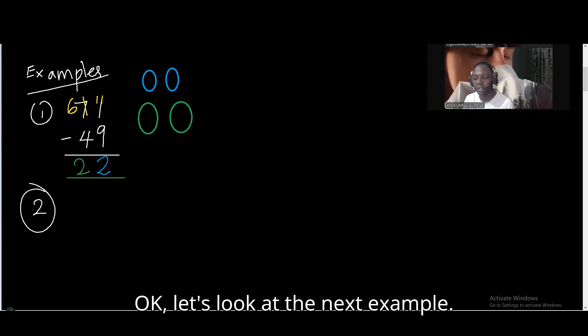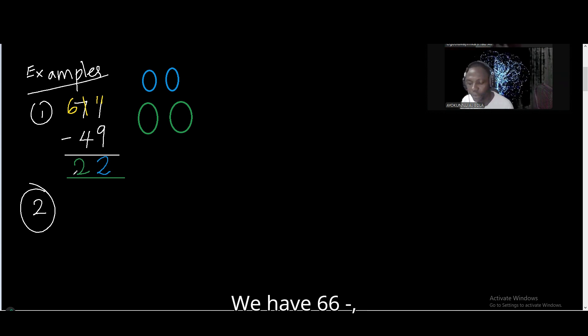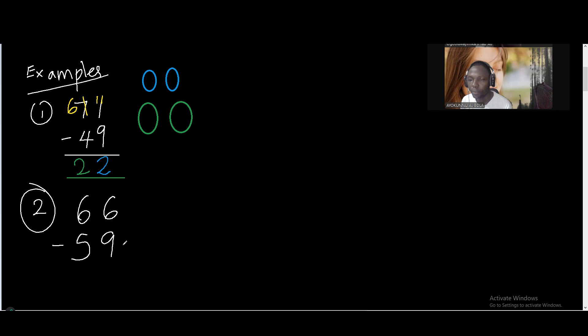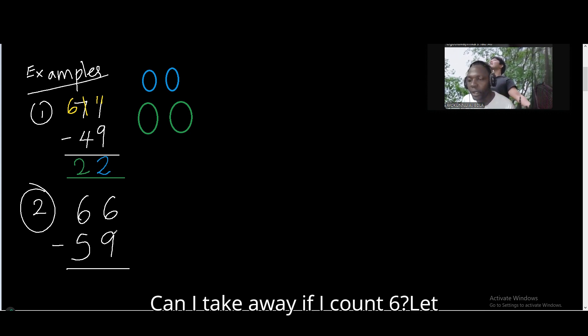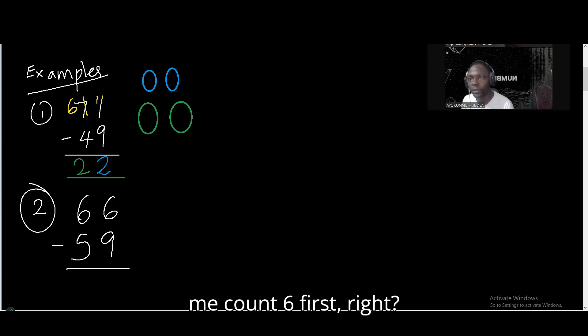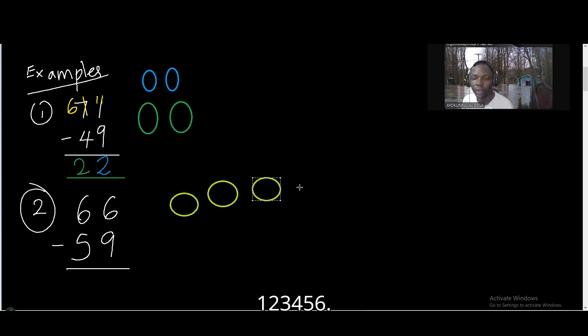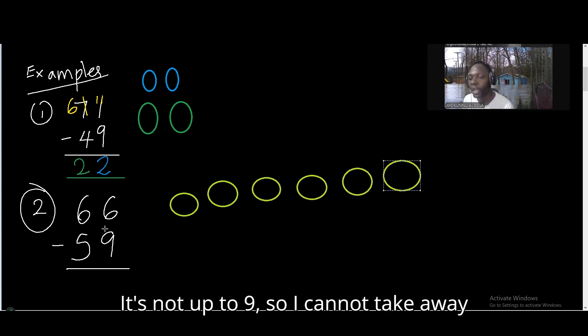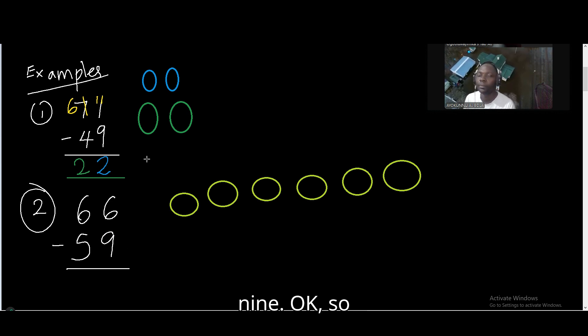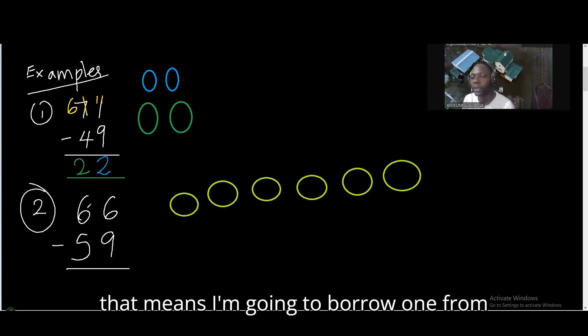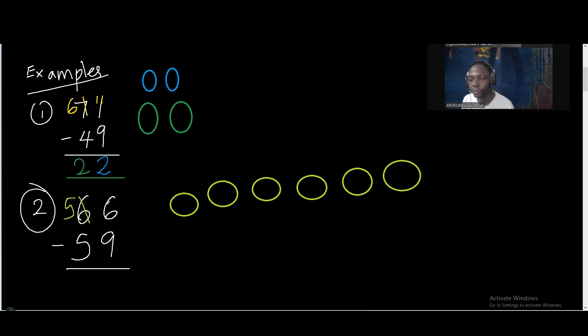Let's look at the next example. We have 66 minus 59. Can I take away 9 from 6? It's not up to 9, so I cannot take away 9. So that means I'm going to borrow 1 from the 6. It remains 5. Then the 1 is a 10. It becomes 16.